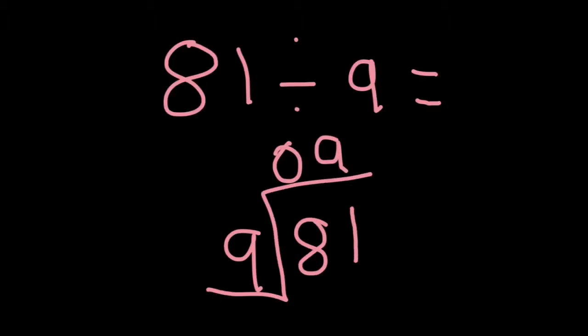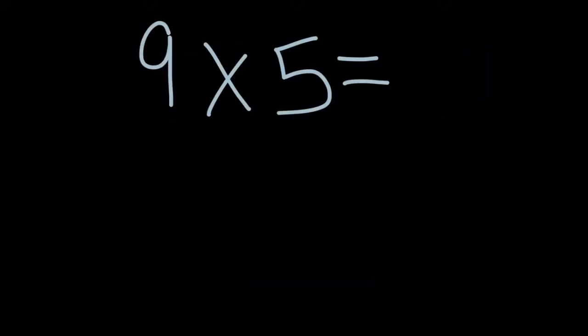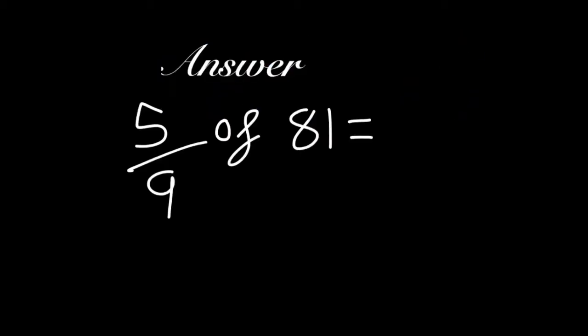81 divided by 9 equals 9. Take the answer which was 9 and then times it by the numerator which was 5, and that would equal 45. So therefore, the answer for five-ninths of 81 is 45.